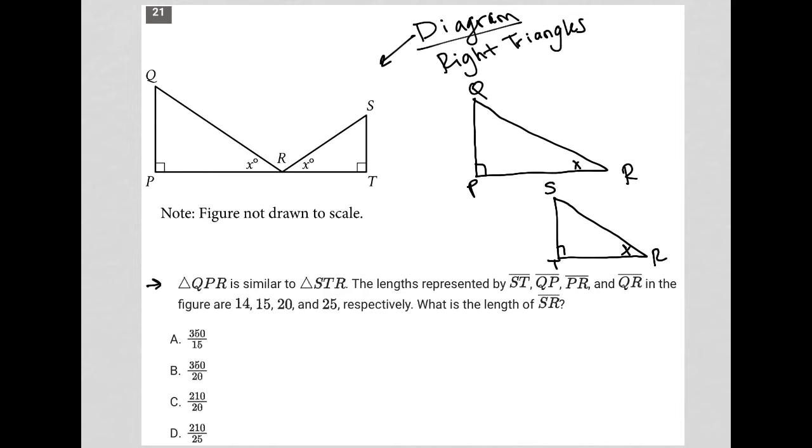Triangle QPR is similar to triangle STR. The lengths represented by ST, QP, PR, and QR in the figure are 14, so 14 for ST, 15 for QP, 20 for PR, PR is 20, okay, and 25 for QR, 25, okay.